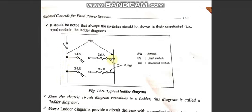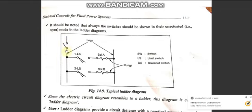The ladder diagram consists of rungs and legs. The left side shows where current flows — alternating current or direct current. The right side is the neutral or ground connection. The electrical control components are connected in between. In this example, a start button is available; when actuated, it closes the circuit and current flows.